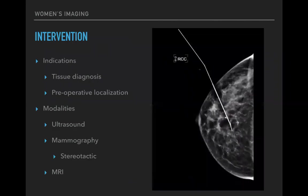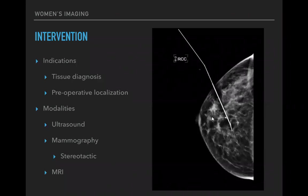Breast imaging interventions are performed for both tissue diagnosis and preoperative localization. For breast conserving surgery, most breast tissue looks and feels the same, so if something is small or an early cancer, guidance is needed. Options include a needle wire, radiofrequency seed, or magnetic seed for pre-surgical localization. Ultrasound, mammography, and MRI can all be used for interventions.